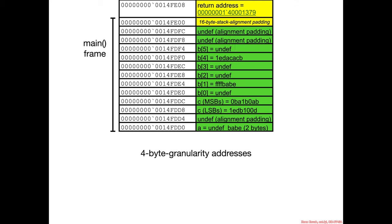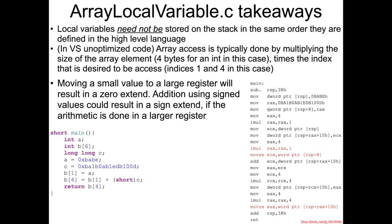So that makes it a little more clear semantically what's going on, but what's interesting is that we declared our local variables abc, but we see that they got rearranged by the compiler: a, padding, c, b, padding. The takeaway from ArrayLocalVariable.c is that local variables do not need to be stored on the stack in the same order they're defined in the high level language.